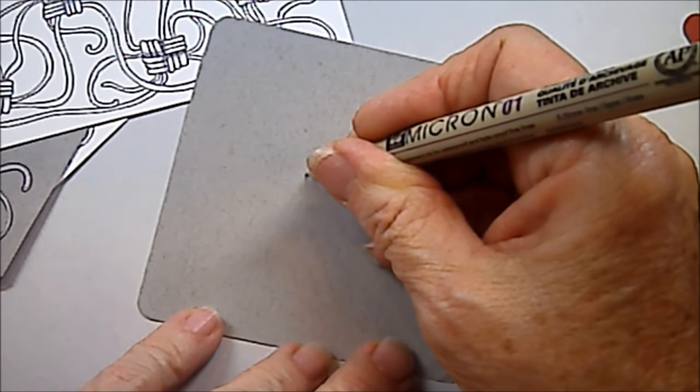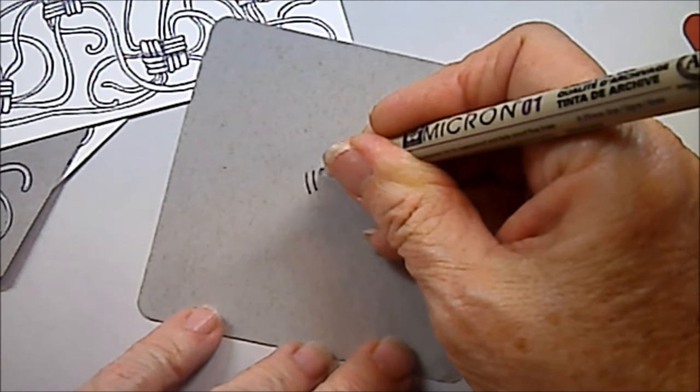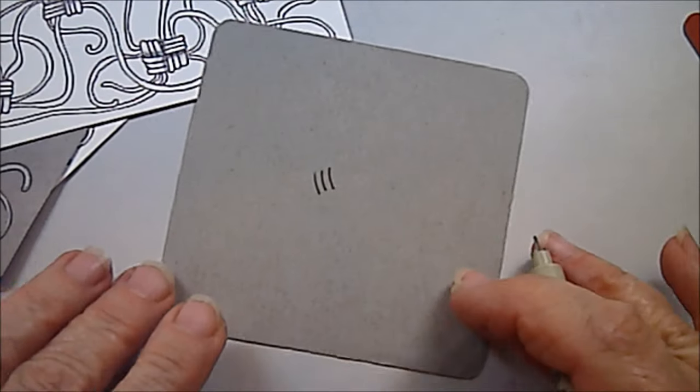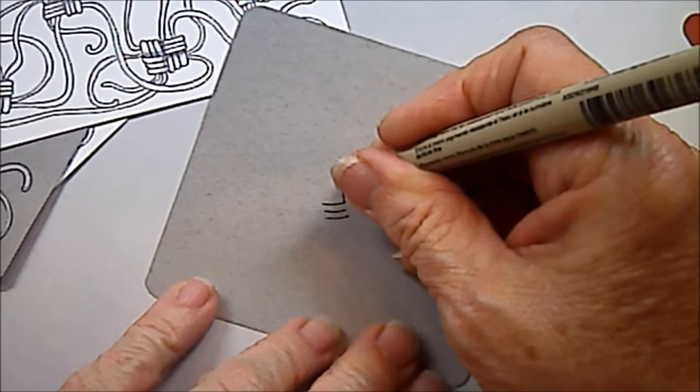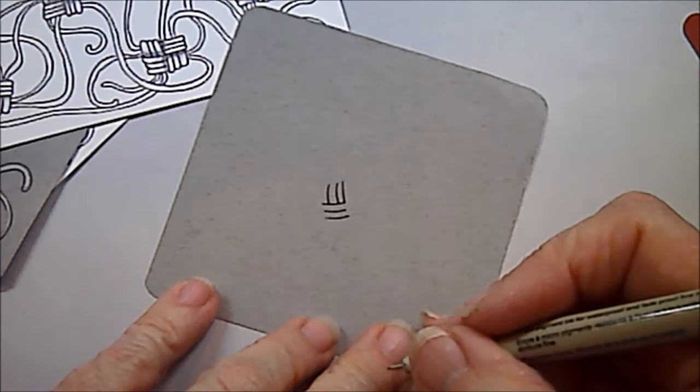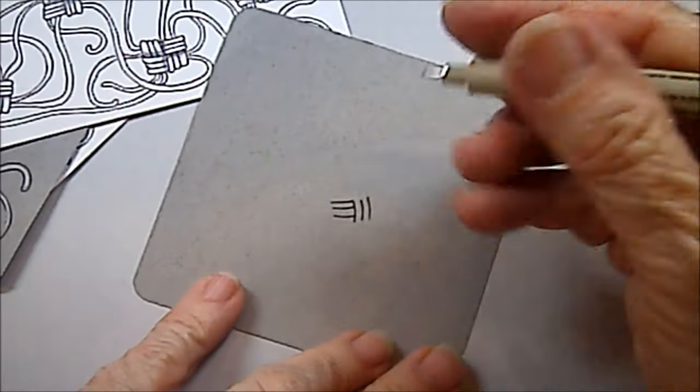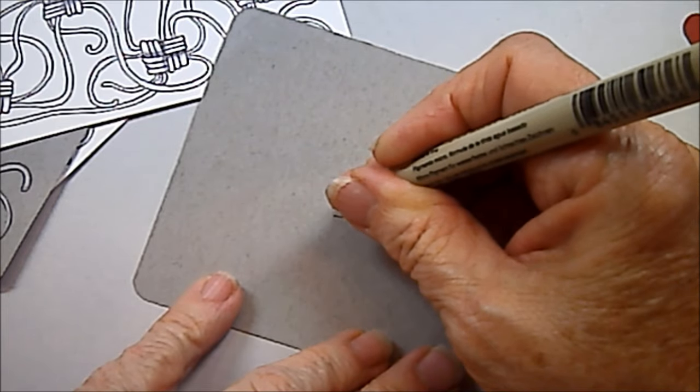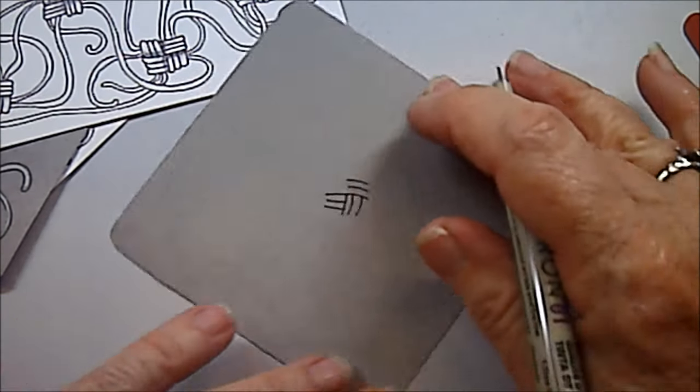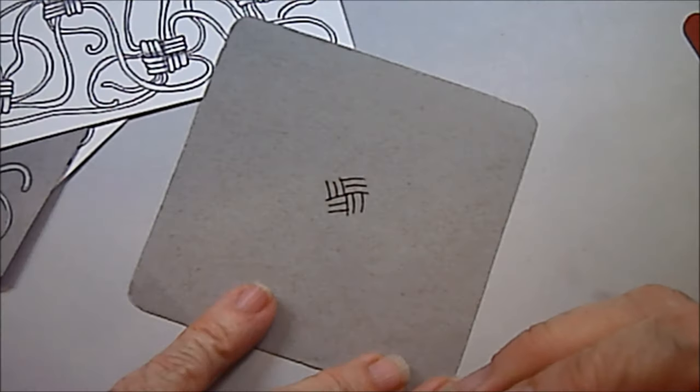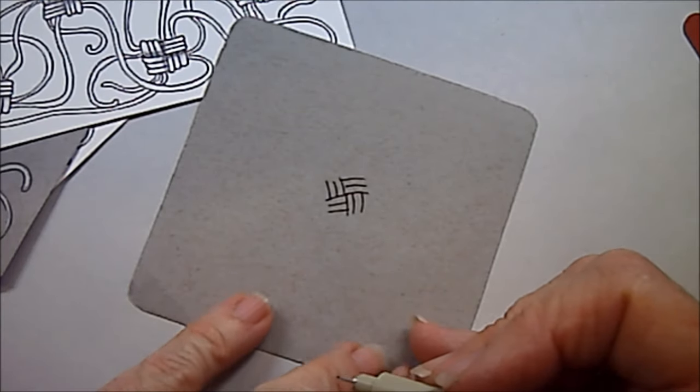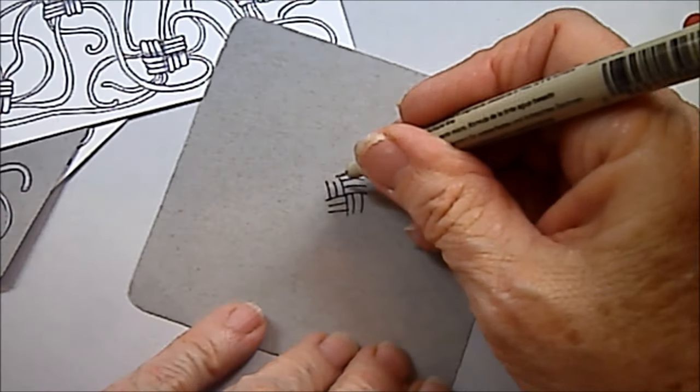So I'm going to start out with three little lines. And then I rotate my tile and do three lines right on top of those. Rotate again and do three lines on top of that to where I have a little square, a basket weave looking piece with three lines.